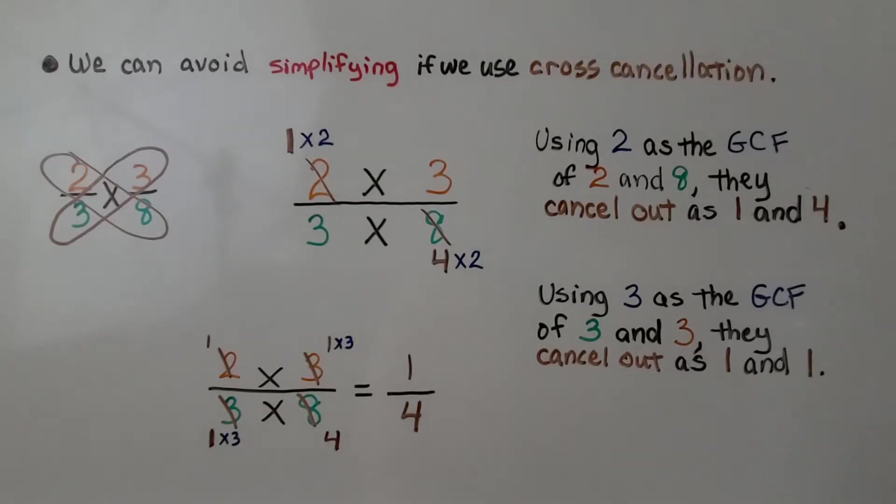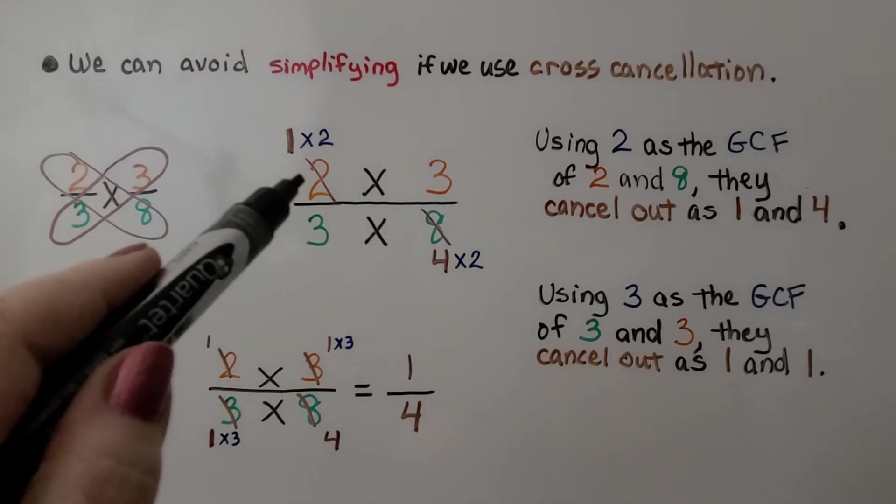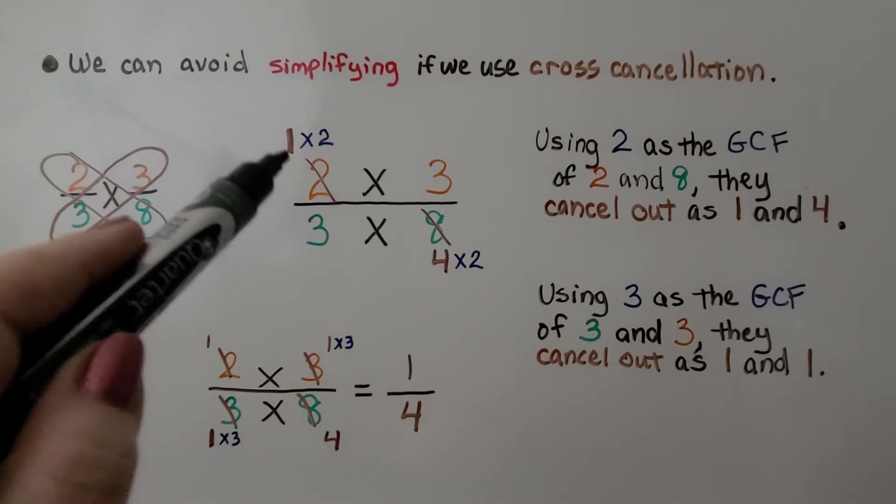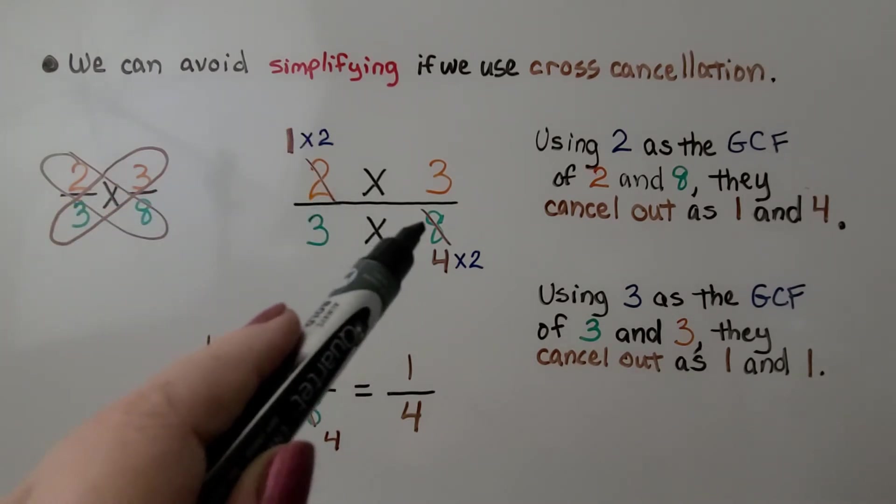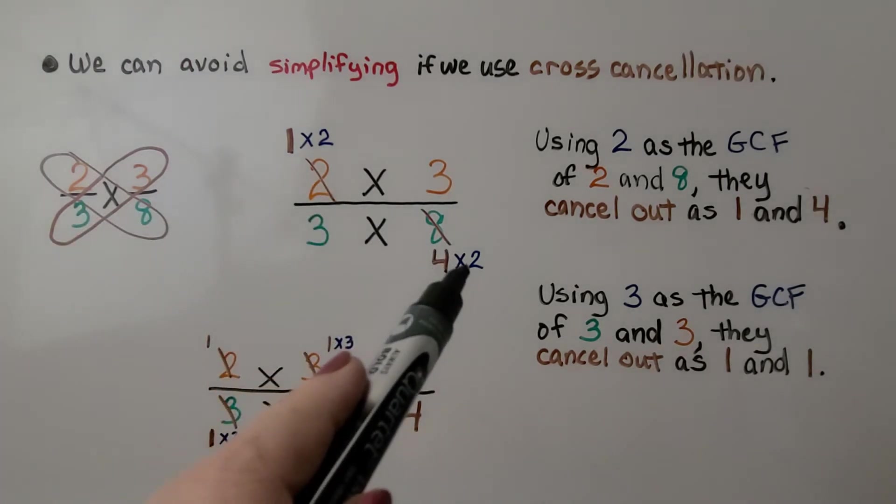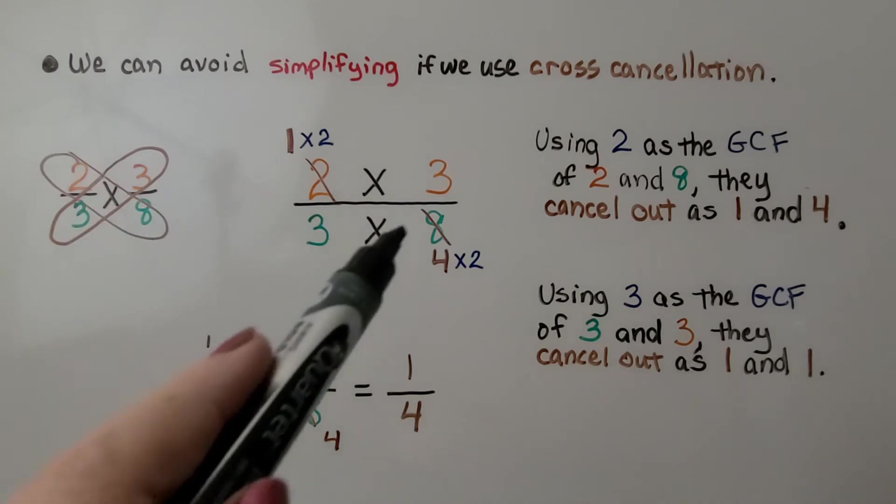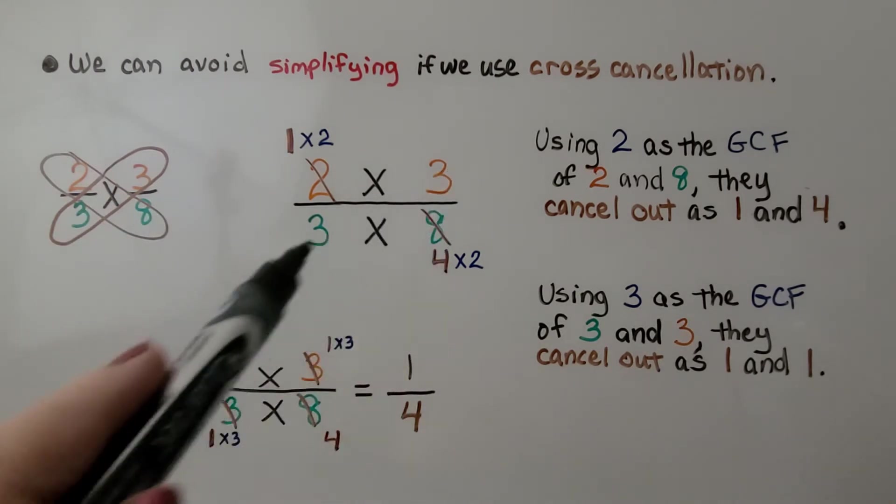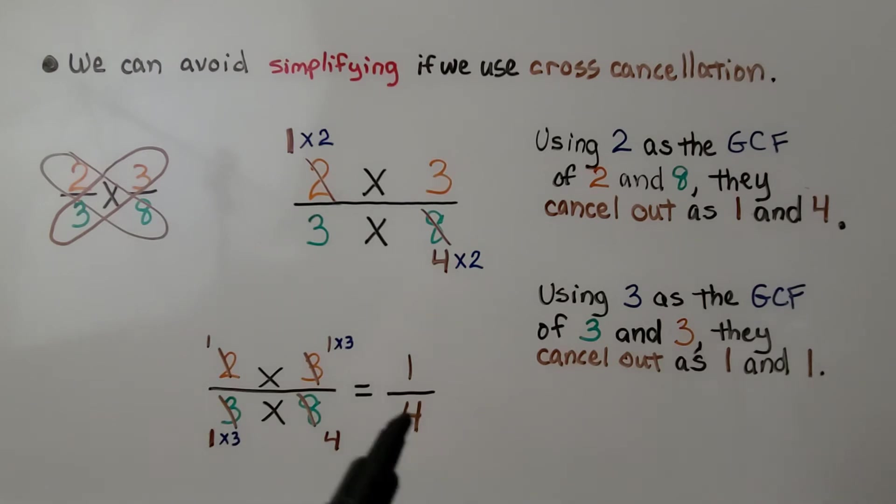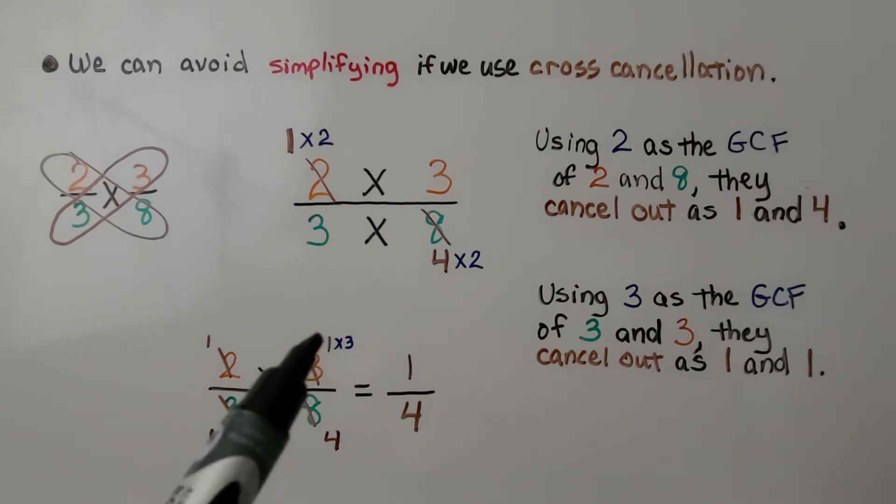We can avoid simplifying if we use cross cancellation. We have 2 thirds times 3 eighths. We use 2 as the GCF for 2 and 8, and they can cancel out as a 1 and a 4. They have 2 as the greatest common factor. 1 times 2 is 2, and for the 8, 4 times 2 is 8. We cross this out as a 1 and this out as a 4. Looking at going this direction, using 3 as the GCF for 3 and 3. 1 times 3 is 3, so we cross this out and make it a 1, and 1 times 3 is 3. We cross this out and make it a 1.